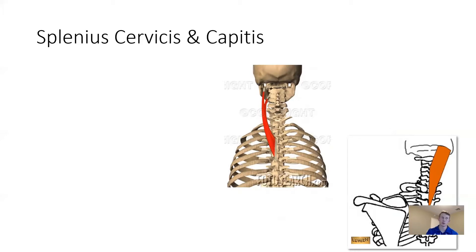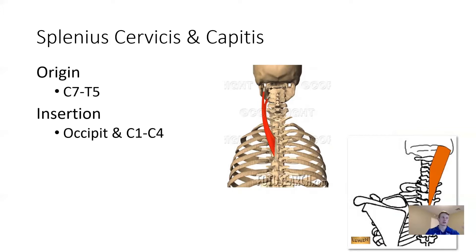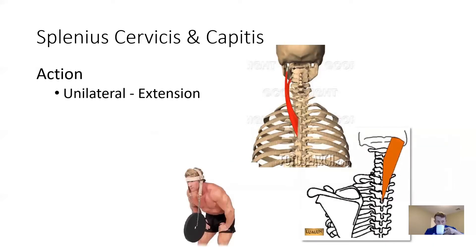Now we'll look at what's happening at the cervical spine. Splenius cervicis and splenius capitis — the splenius group — are cervical extensors. They have their origin on C7 and T5, and then their insertion on the occipital protuberance and on C1 through C4. These muscles cause same-side extension and same-side rotation. Together they can work for extension, and unilaterally for same-side rotation — so right splenius will cause right cervical rotation.